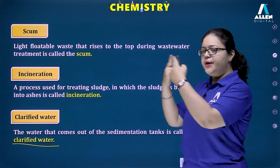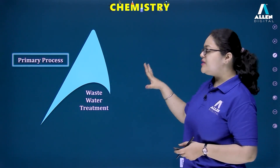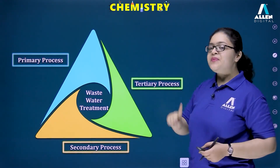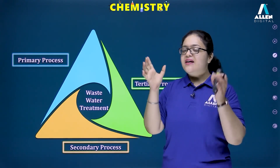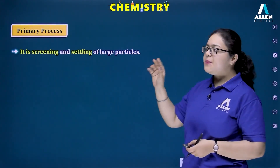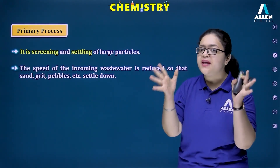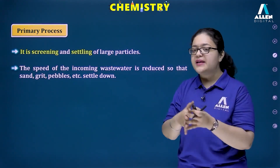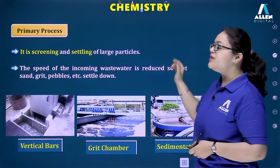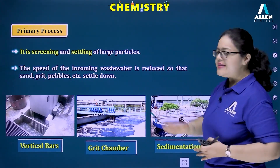Clarified water is passed on into the secondary process. There are three processes in wastewater treatment: primary, secondary, and tertiary. We'll understand each one and then see a diagram. In the primary process, we have screening and settling of particles. We first remove large impurities such as wooden cardboard boxes, plastic, polythene, cloth rags, and sticks. The speed of incoming wastewater is reduced so that sand, grit, pebbles, and heavy impurities are easily removed.